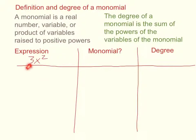For example, 3x squared is a monomial. It's a real number multiplied with a variable raised to a positive power. So yes, it is a monomial, and we can talk about its degree. The degree of a monomial is the sum of the powers of the variables of the monomial. This only has one variable, the x, and its power is 2, therefore this is a second degree monomial.